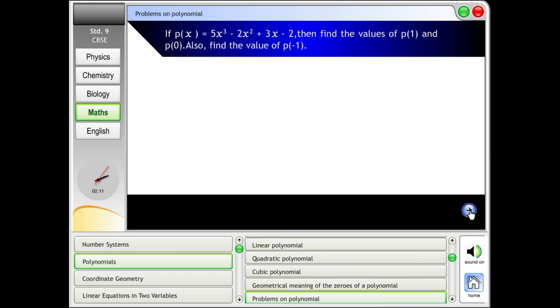Problems on polynomial. If p(x) = 5x³ - 2x² + 3x - 2, then find the values of p(1) and p(0), also find the value of p(-1). Solution.